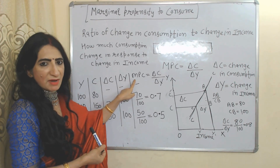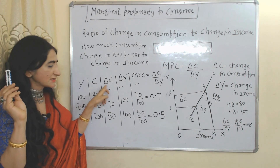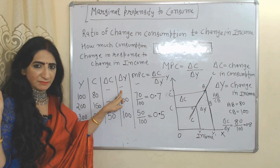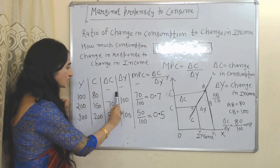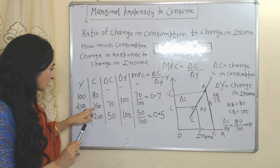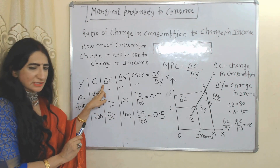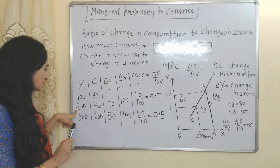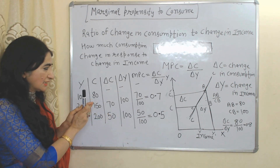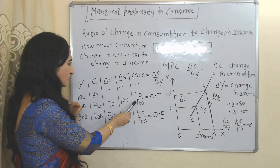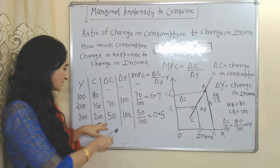Delta C is change in consumption and delta Y is change in income, calculated by subtracting previous income from current income. In the first case we put a dash because we don't know the previous year's income or consumption. In the second case, current consumption is 150 and previous consumption is 80, so 150 minus 80 equals 70 — this is the change in consumption. Previous income is 100 and current income is 200, so 200 minus 100 equals 100 — this is the change in income. Therefore, MPC equals 70 over 100, which is 0.7.